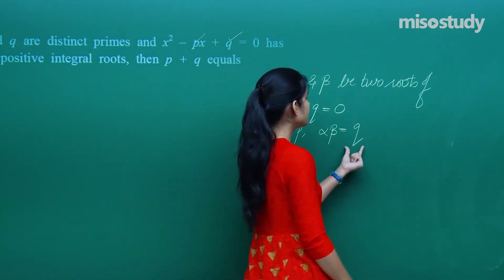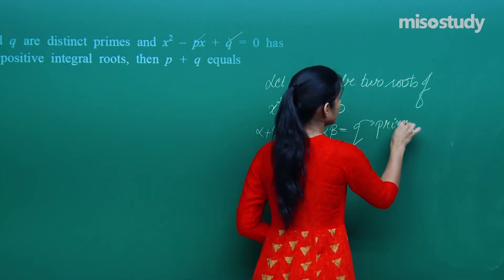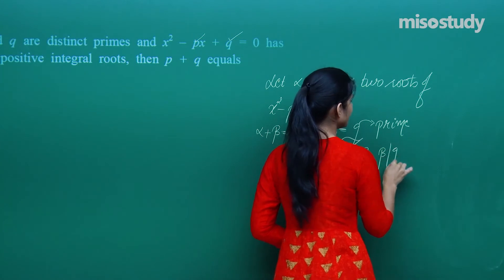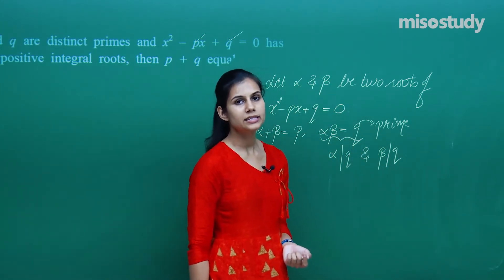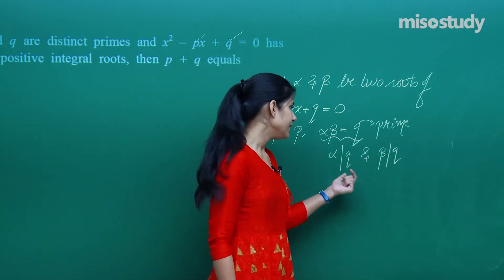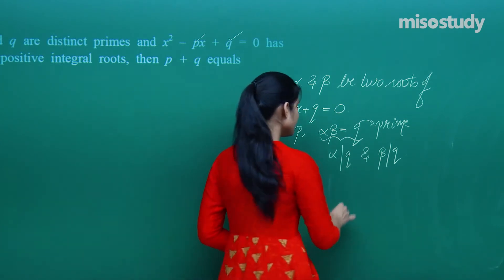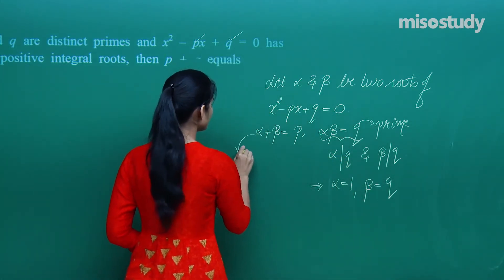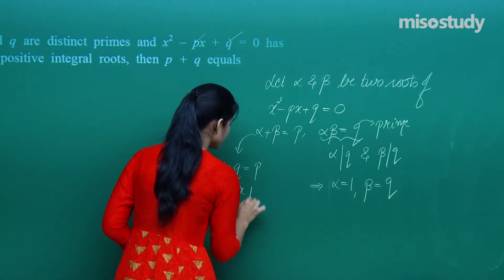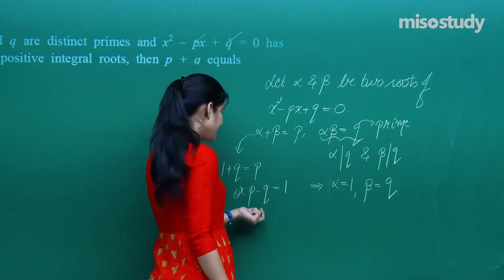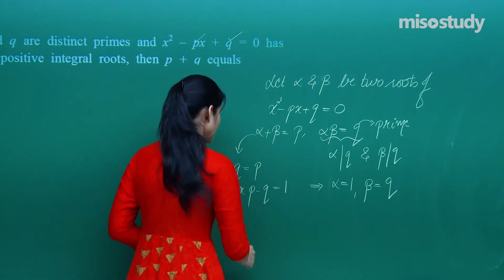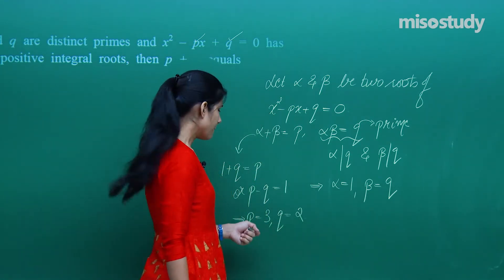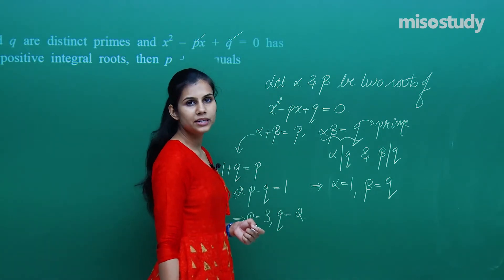Since alpha × beta = q and q is prime, alpha and beta must both divide q. But because q is prime, only 1 and q can be its factors. So alpha = 1 and beta = q. That means 1 + q = p, or p - q = 1. If p and q are primes with difference 1, the only option is p = 3 and q = 2.